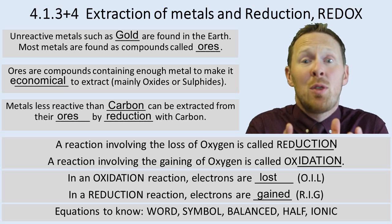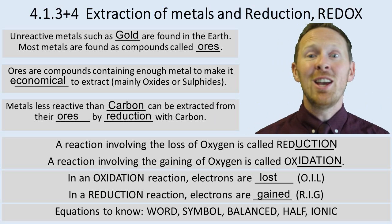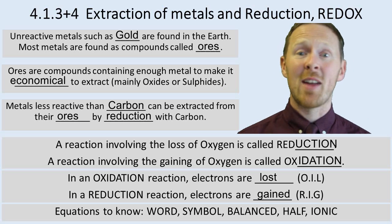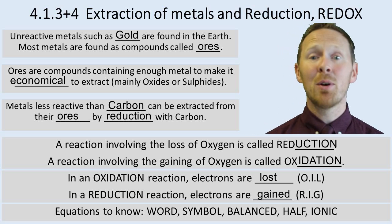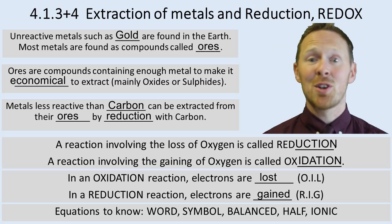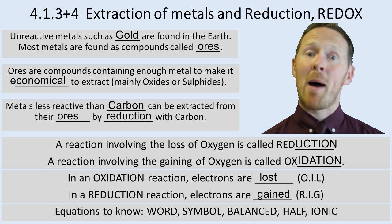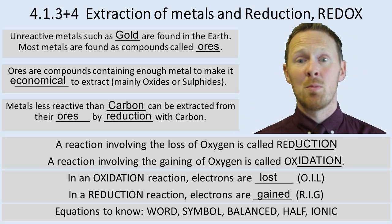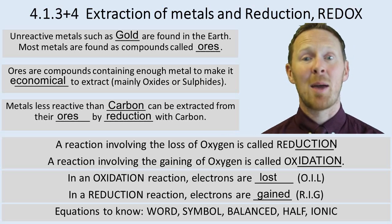Within a redox reaction there are two things going on: a reduction part and an oxidation part. You need to be confident about the different types of equations. For a word equation, you write the words, not the symbols. For a symbol equation, make sure you put the symbols — for example, write CO₂, not 'carbon dioxide'. For a balanced equation, the number of atoms on the reactants side equals the number on the products side, because no atoms are lost in a chemical reaction.